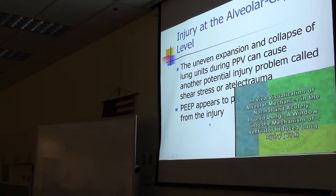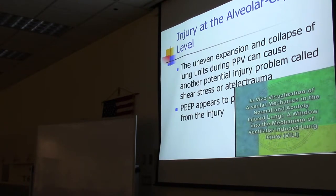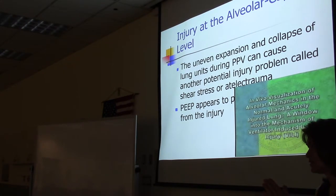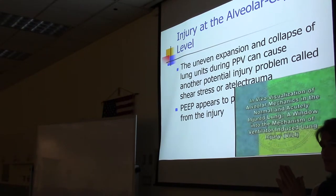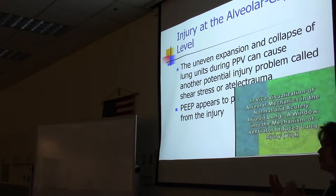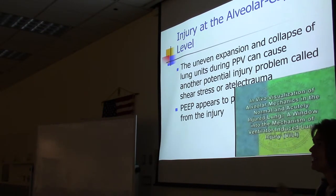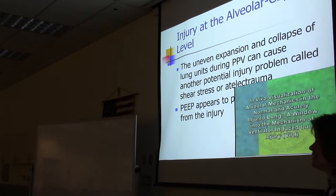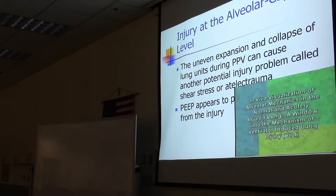Another potential injury is shear stress, also called atelectrauma. This occurs when alveoli expand during inspiration and then collapse during exhalation, and then the next breath pushes them open again — repeated opening and closing damages the alveolus. Using optimal PEEP to keep those alveoli open will prevent atelectrauma or shear stress from occurring.